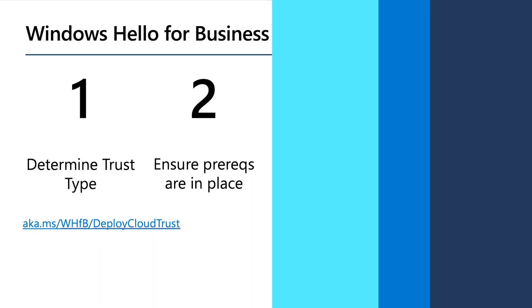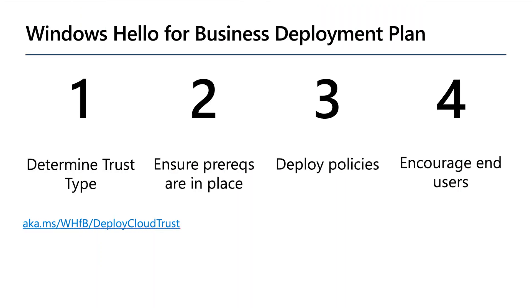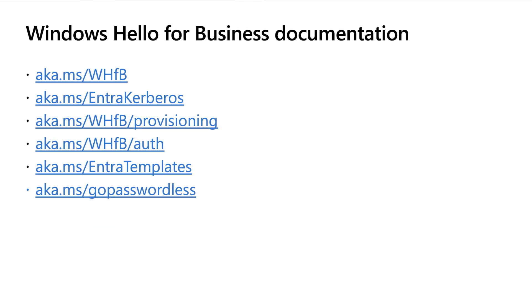Now that you've seen the demo, here's a quick recap of your Windows Hello for Business deployment plan. First, pick which trust type is best for your business use cases — we highly recommend you go with Cloud Kerberos Trust unless you have a compelling reason not to. Then ensure all the prerequisites are in place, deploy your policies, and encourage your end users to get involved. We also have quite a bit of documentation to help you get started, so be sure to take a screenshot of the links on screen. Thank you so much for joining us, and good luck deploying Windows Hello for Business.